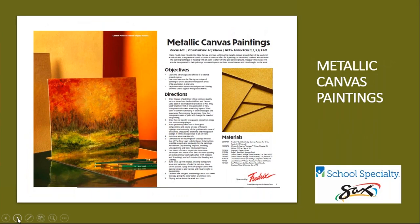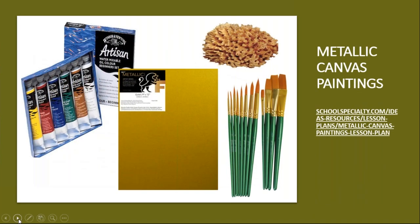Our next work of art and lesson plan comes from Phyllis Annette of Caldwell, New Jersey. This beautiful landscape is created on a new metallic canvas from Frederick's and the lesson is titled Metallic Canvas Paintings. These canvases provide a shimmering metallic colored ground used with water-mixable transparent oil colors to create a luminous effect. Students will also learn the painting technique of glazing with oil paints to show off the gold-colored ground. Primary materials include Windsor-Newton Artisan water-mixable oil colors, Frederick's gold metallic canvas in a 9x12 size, Saks Golden Taklon brushes, and sea sponges.